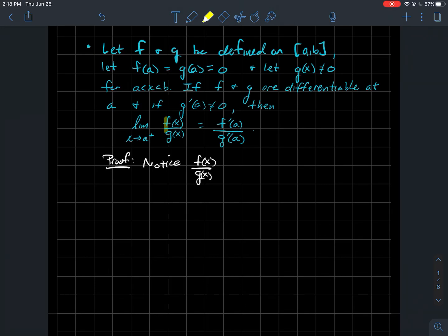So what we're going to do is we're going to play around with just this fraction f of x over g of x, and I claim that that's equal to f of x minus f of a over g of x minus g of a.